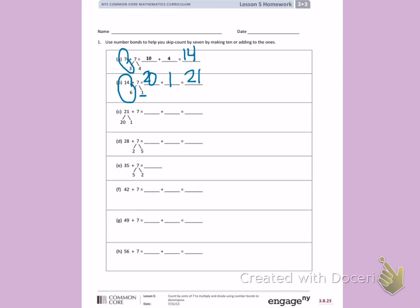Letter C. 21 has been decomposed into 20 and 1. I'm going to put 7 and 1 together so I can add 20 plus 8, which is 28.